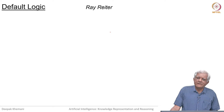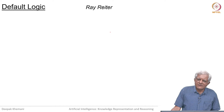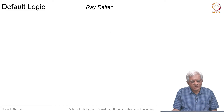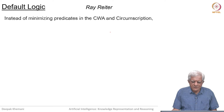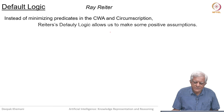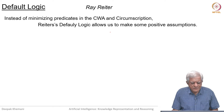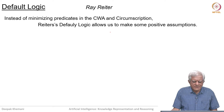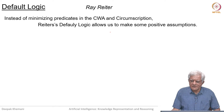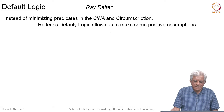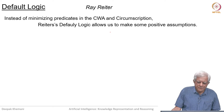Welcome back. We are looking at our third approach to default reasoning, and that is called default logic. It was devised by Ray Reiter. Instead of minimizing predicates, which is what circumscription does, Reiter's default logic allows us to make some positive assumptions.